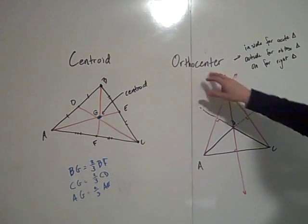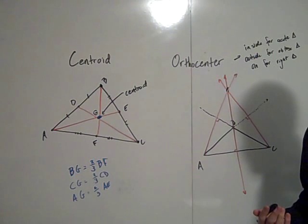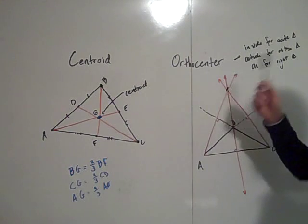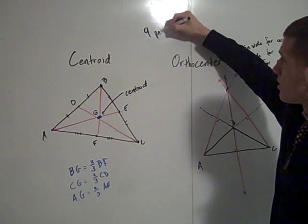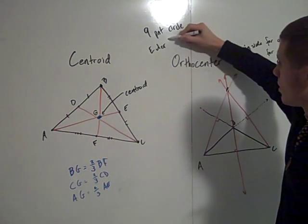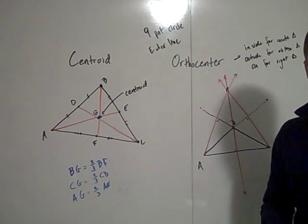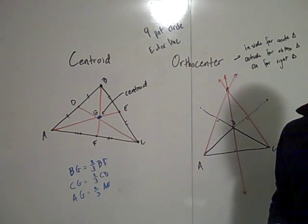The orthocenter, the centroid, and the circumcenter are three points that are actually collinear — they're collinear on the Euler line, which is pretty interesting. The orthocenter also leads to something called the nine-point circle. So these things lead to the nine-point circle and the Euler line. So we have the centroid, the circumcenter, and the incenter — those are the four centers of the triangle.